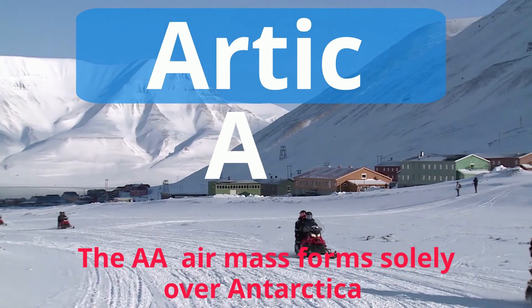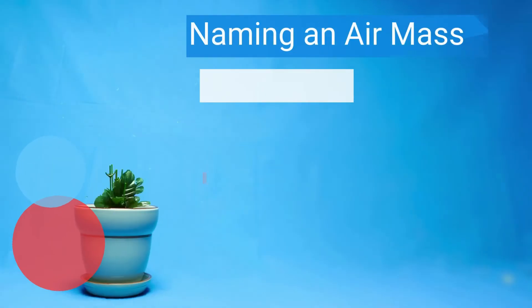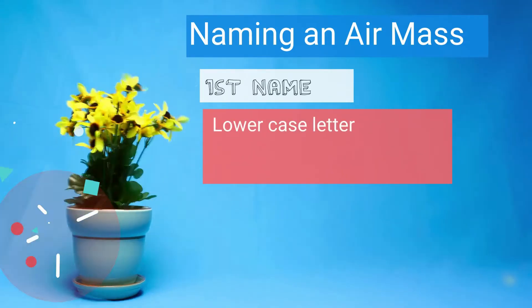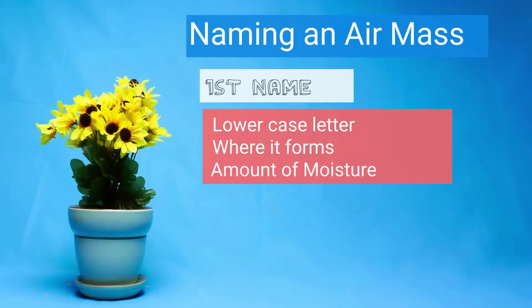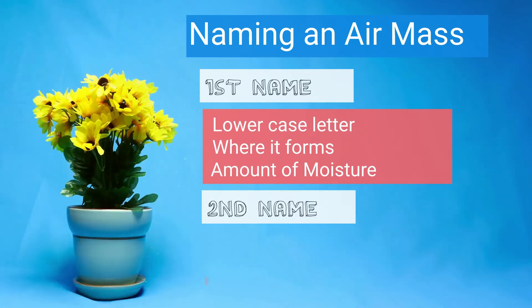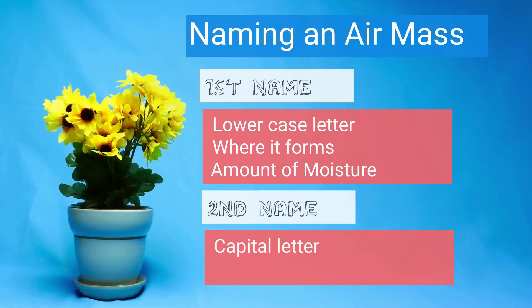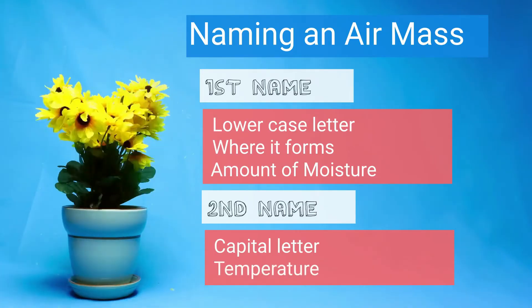An airmass contains two names. The first name is always lowercase and describes where it is formed and the amount of moisture the airmass contains. The second name is capitalized and describes its temperature.